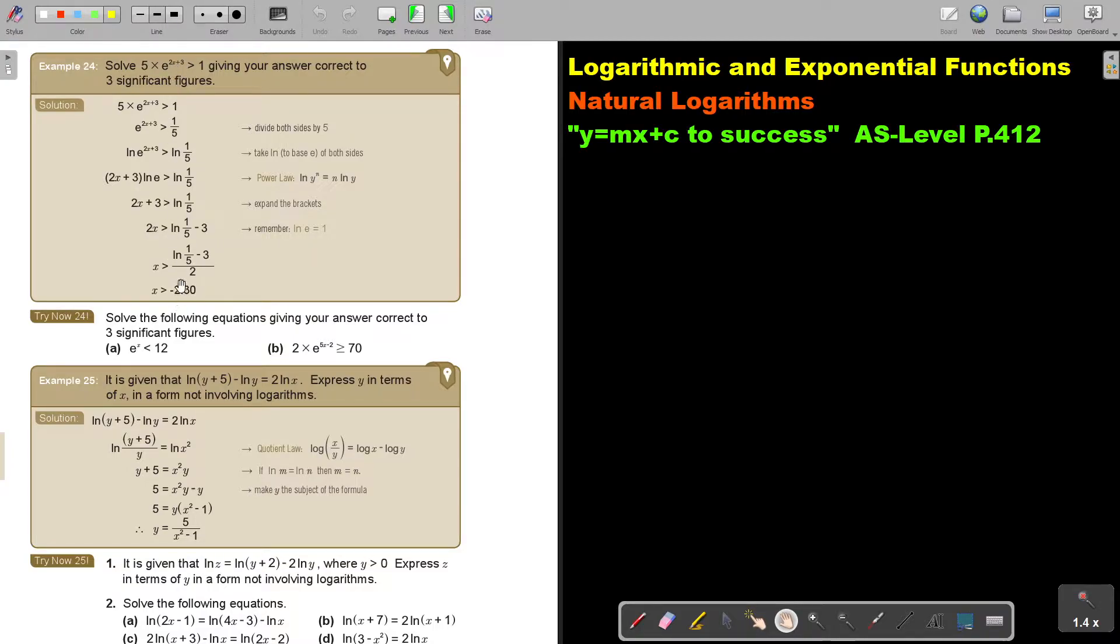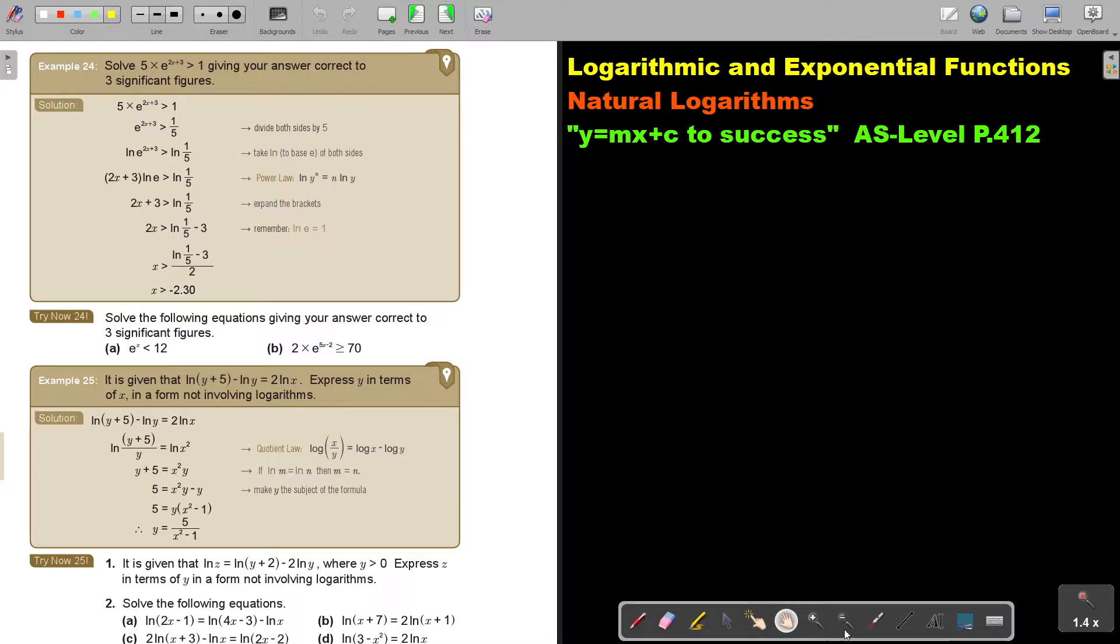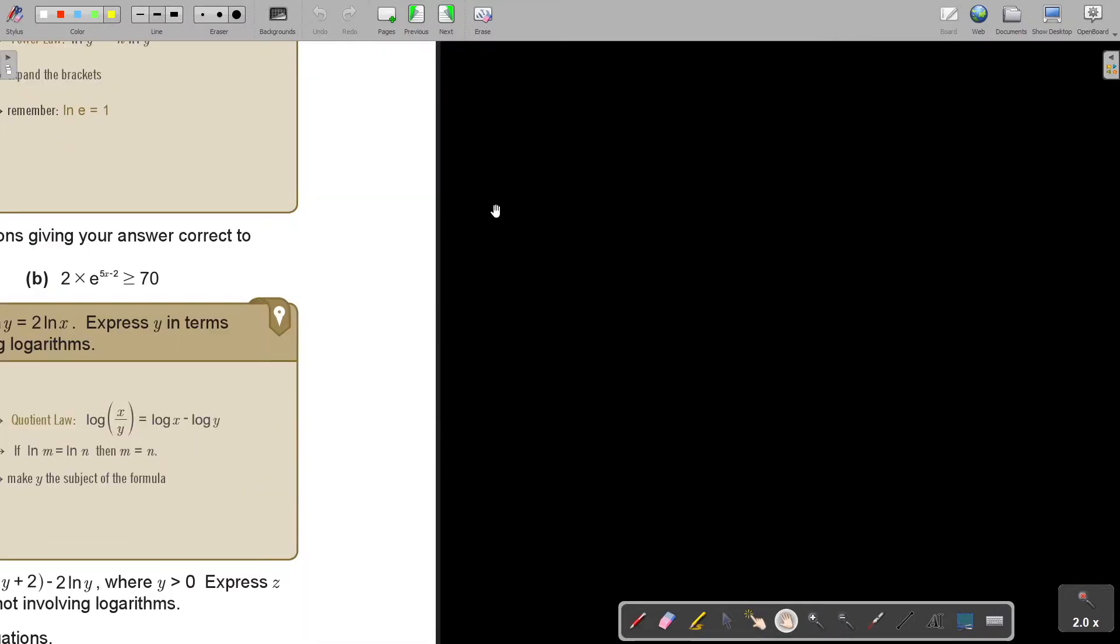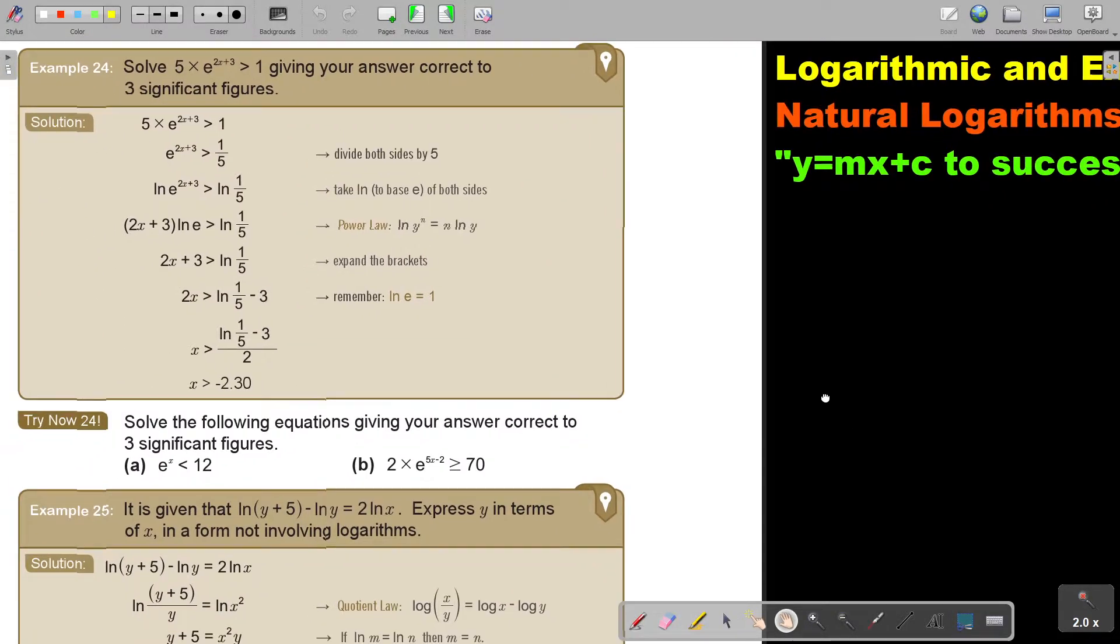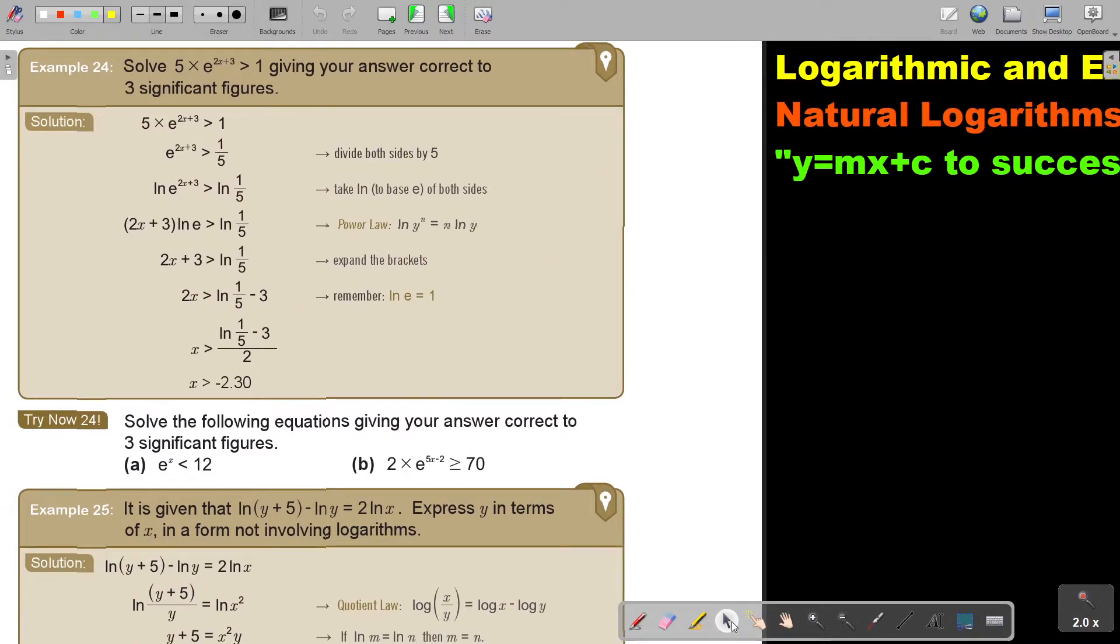Let's look at another example. I'm just going to make it a bit bigger. Solve 5 multiply e to the power 2x plus 3 is bigger than 1, giving your answer correct to 3 significant figures. So now it's the inequality coming in.